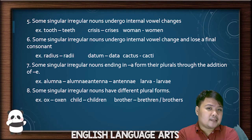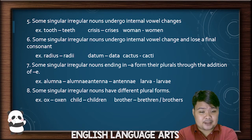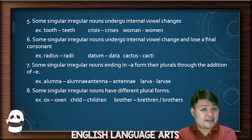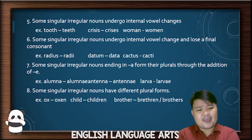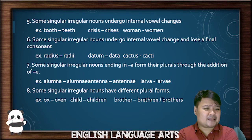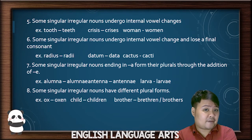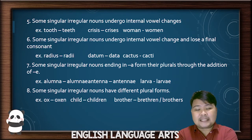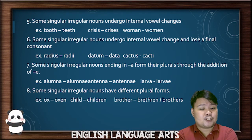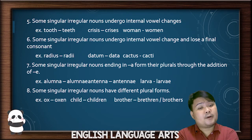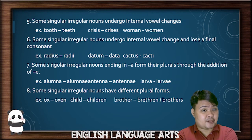For rule 7 of irregular nouns, sometimes you just add an E to make it plural. For example: alumna becomes alumnae, antenna becomes antennae, and larva becomes larvae. And for rule 8, some irregular nouns have very different plural forms — ox becomes oxen, child becomes children, and brother becomes brethren or brothers.